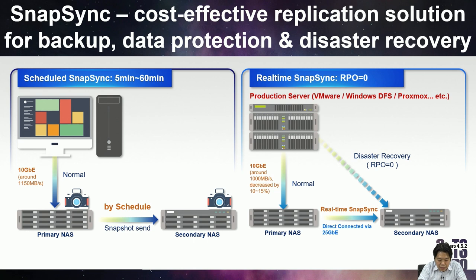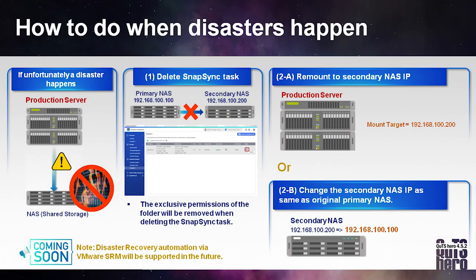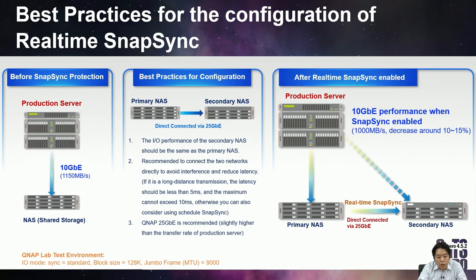The restart recovery plan will be launched in a very short time. Besides scheduled SNESync, we provide a more advanced real-time SNESync function that allows the primary NAS and the secondary NAS to keep data synchronized anytime and anywhere. The key data can get the latest, most complete, and instant backup. Both sides are always keeping the same data, and that's why we say the RPO can equal zero. If a disaster happens, the IT team can quickly stop the SNESync task on the secondary NAS and modify the IP address to make it the same as the primary NAS, or change the settings on your VMware or Windows DFS server to remount the shared storage to your secondary NAS.